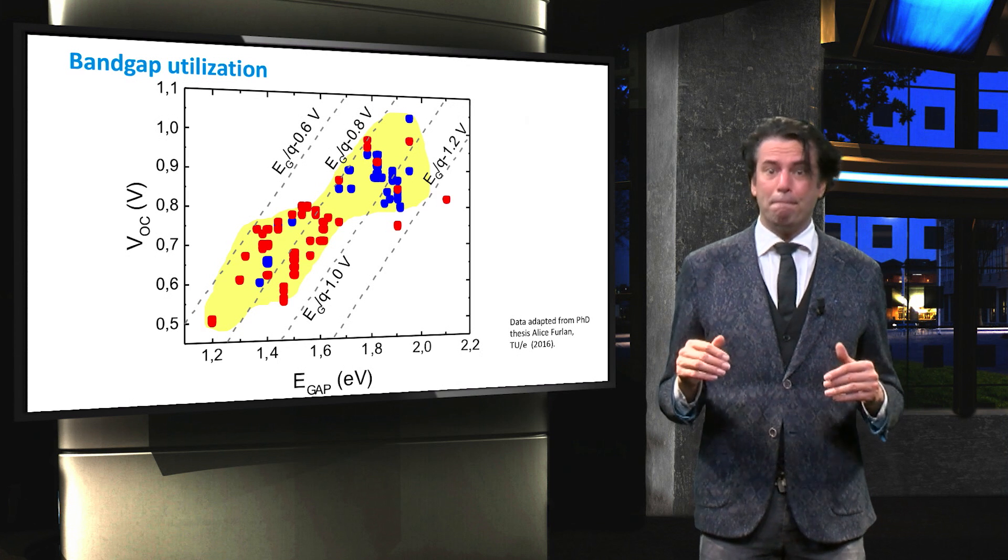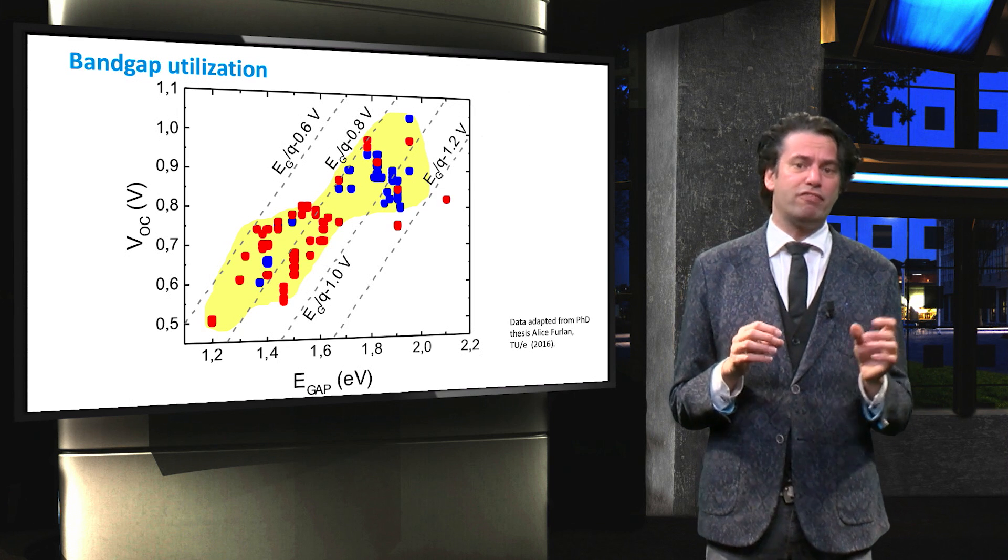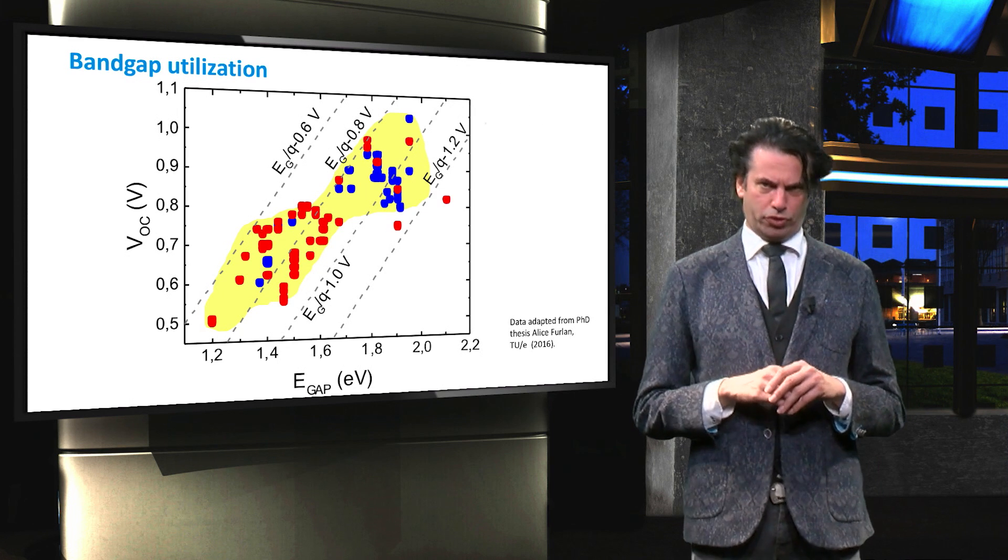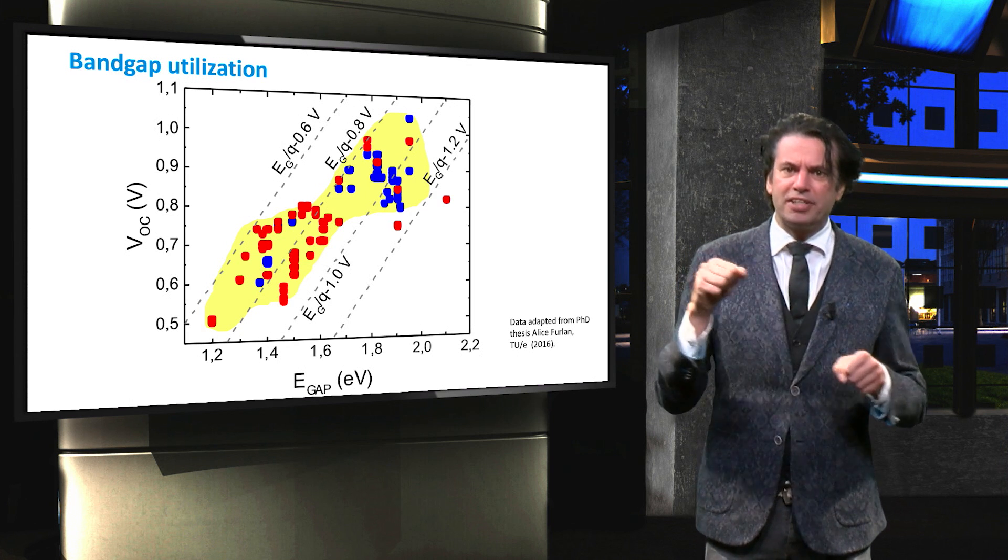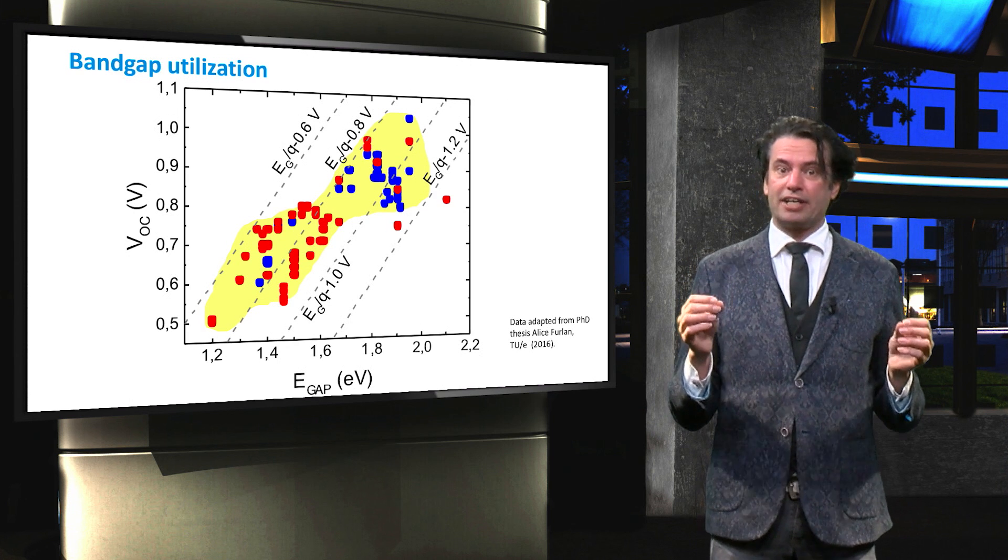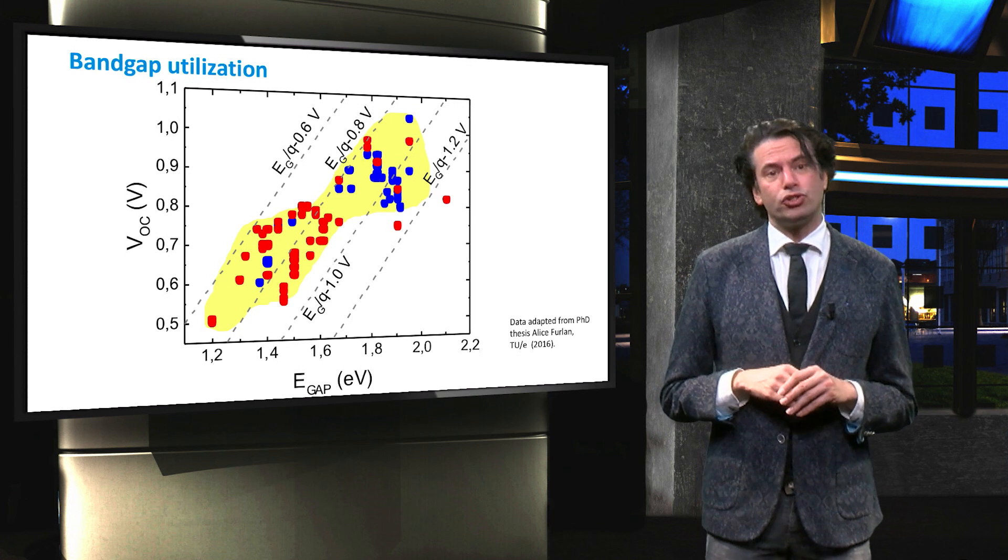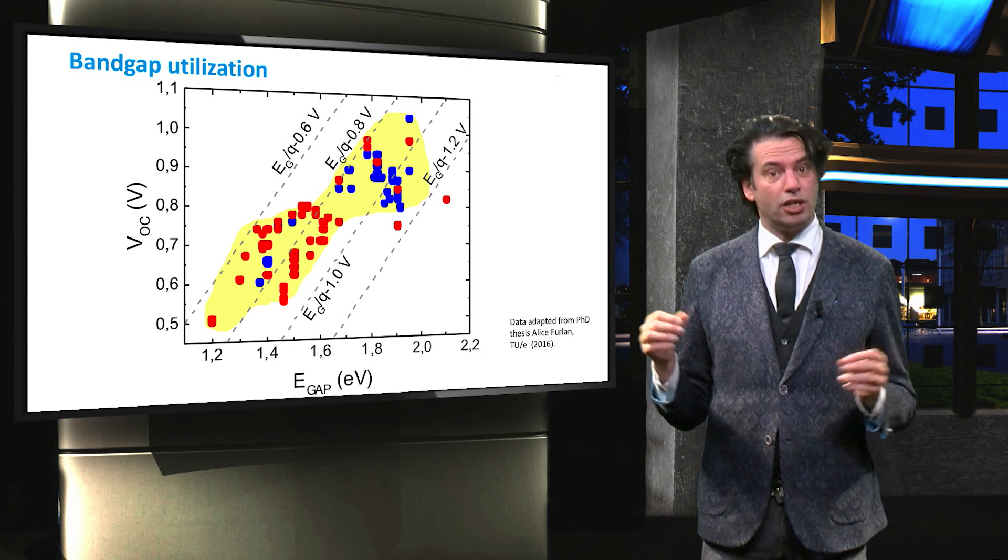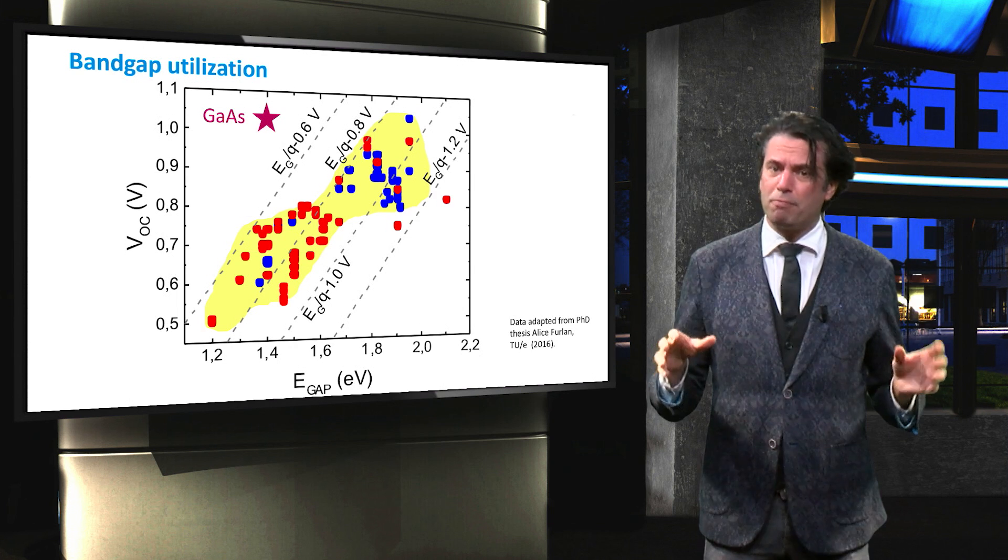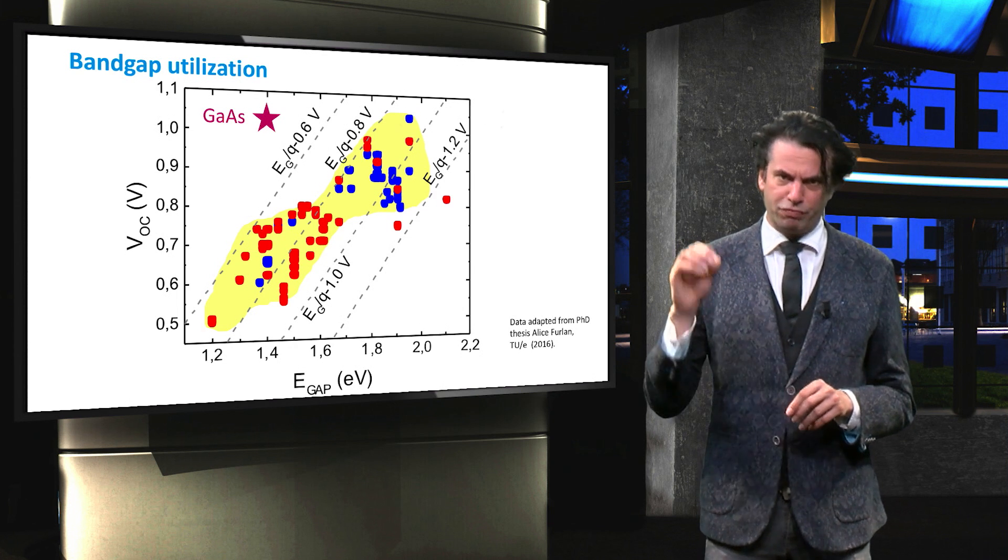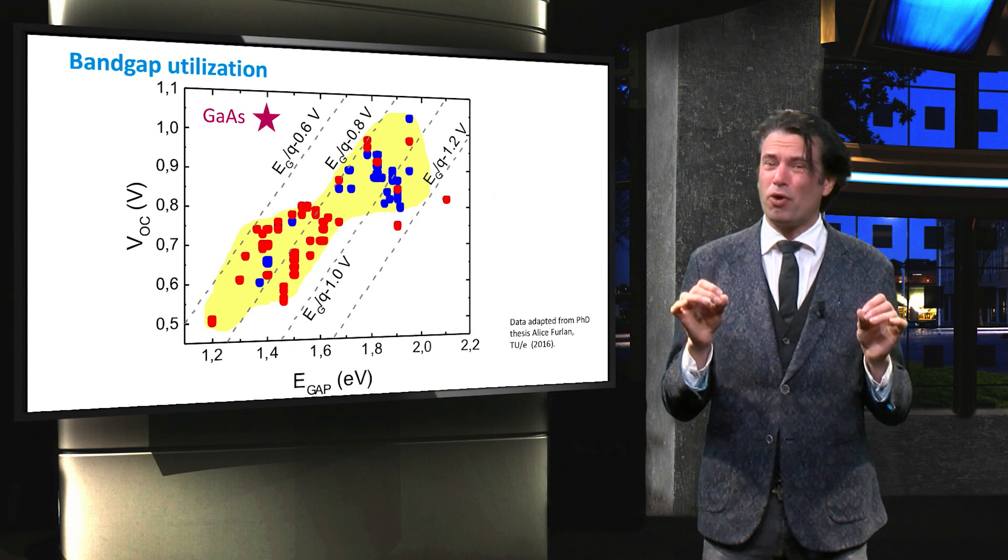In contrast, the high band-gap materials suffer from a poor band-gap energy utilization, as their loss is more than 0.8V, even up to 1.2V. It is believed that for high band-gap materials, the energy required for separating the charges, which means breaking the binding of the electron hole in the exciton, is increased. The band-gap utilization losses are considerable compared to, for instance, a direct band-gap material. Compared to crystalline gallium arsenide with a band-gap of only 1.4V, the VOC is equal to 1V, this is only a loss of 0.4V.